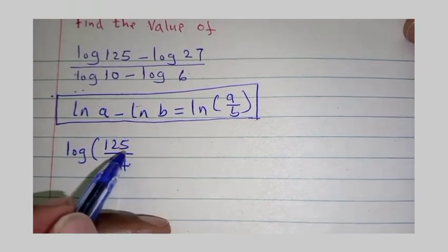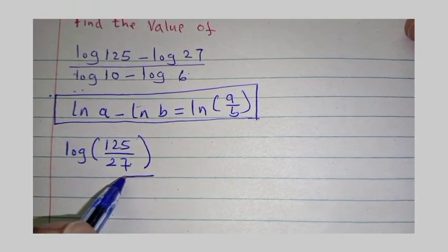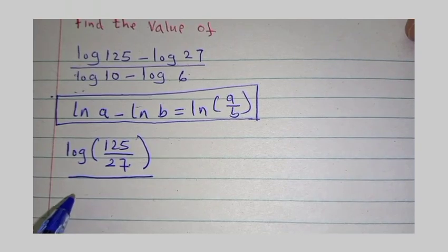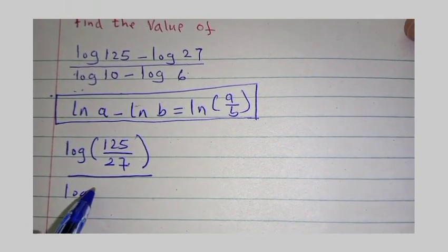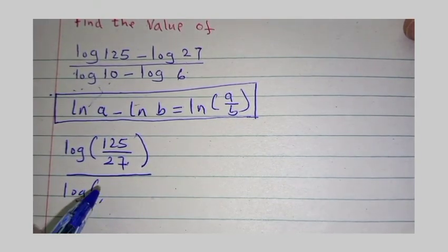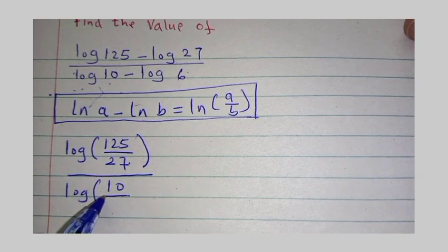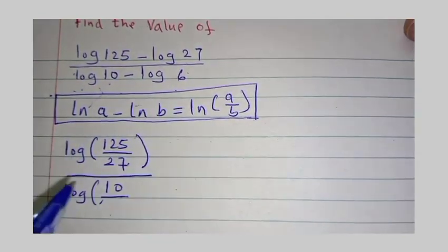That way then divided by a log of bracket, our a here is 10, 10 divided by our b is 6.